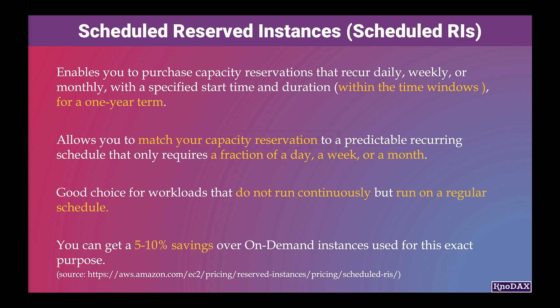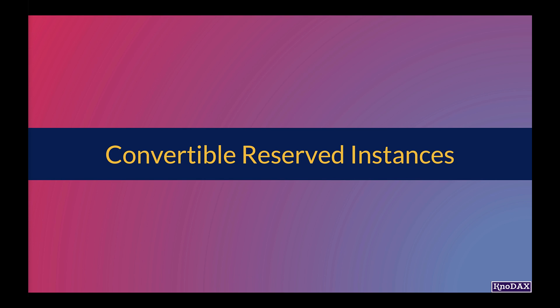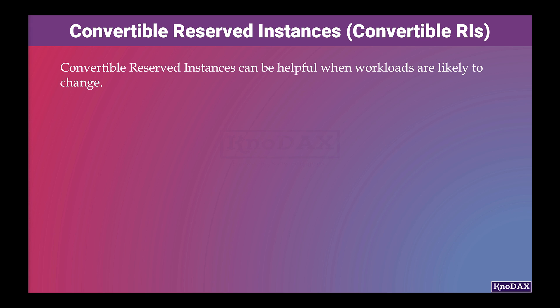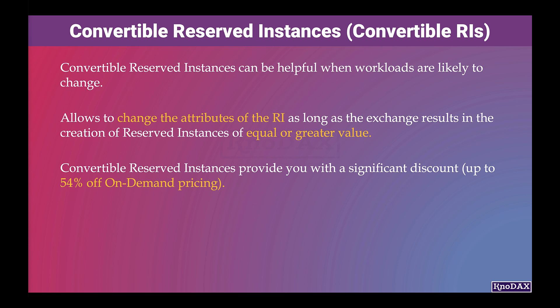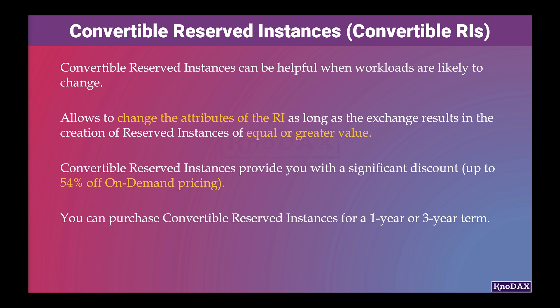Convertible reserved instances can be helpful when workloads are likely to change. They allow changing the attributes of the reserved instance as long as the exchange results in the creation of reserved instances of equal or greater value. For example, you can change the EC2 instance type, instance family, OS, scope, or tenancy. Convertible reserved instances provide a discount of up to 54% off on-demand pricing. You can purchase convertible reserved instances for a one-year or three-year term. Like standard RIs, convertible reserved instances are best suited for steady-state usage.